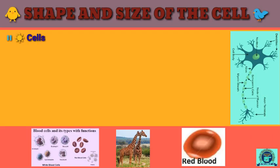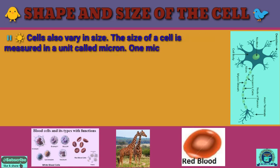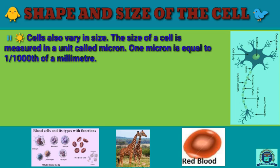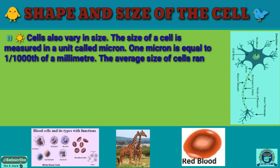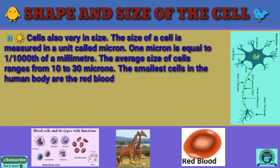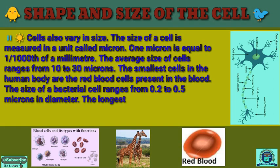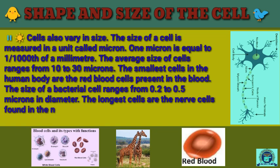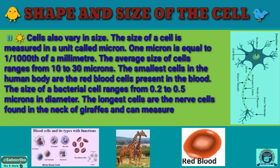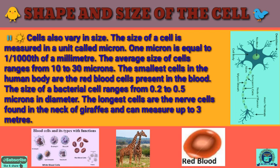The diagram shows the different shapes of human cells. Cells also vary in size, and the size of a cell is measured in a unit called the micron. One micron is equal to one-thousandth of a millimeter. The average size of a cell ranges from 10 to 30 microns. The smallest cells in the human body are the red blood cells. The size of bacterial cells ranges from 0.2 to 0.5 microns in diameter.